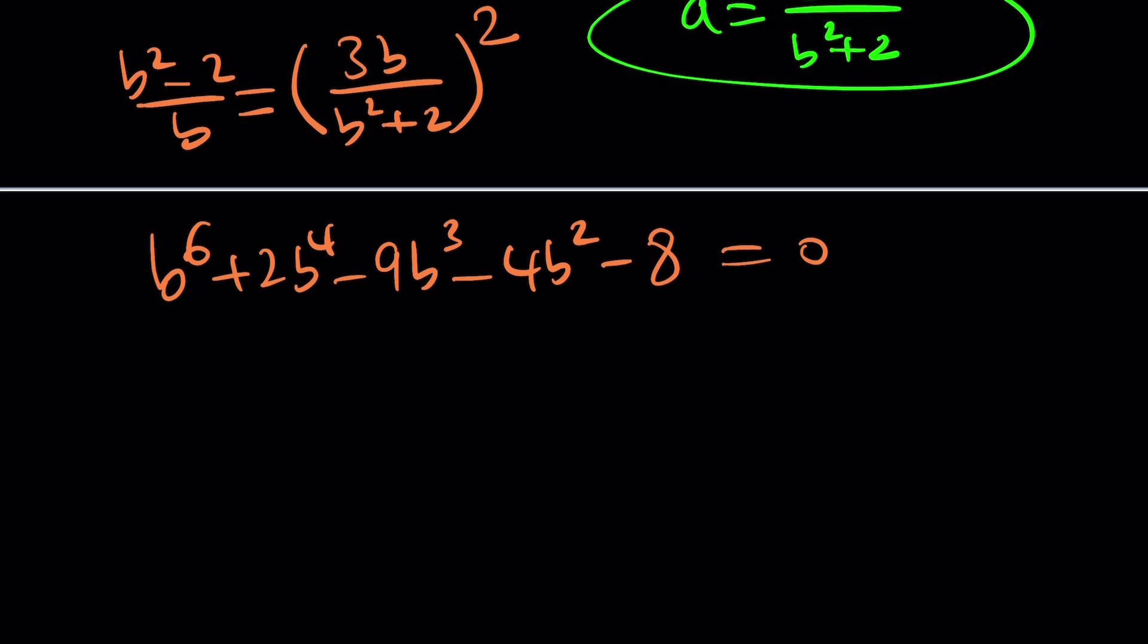But, anyways, our hexic is going to look like this: b to the 6 plus 2b to the 4th after simplifying all that stuff. So, I did that work for you. And you should be getting something like this, if I'm not mistaken. Now, you're probably stuck. You can guess and check. Use the rational root theorem or possibly use Wolfram Alpha. But, let me tell you something. There are two things that you should always check with polynomial equations, regardless of the degree.